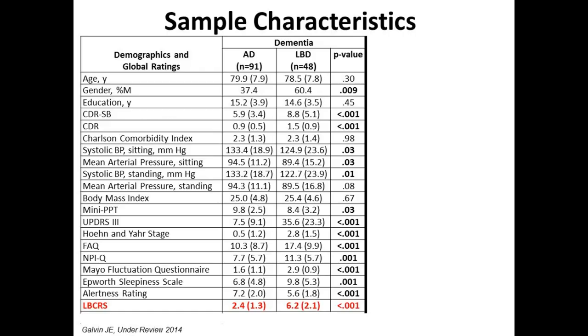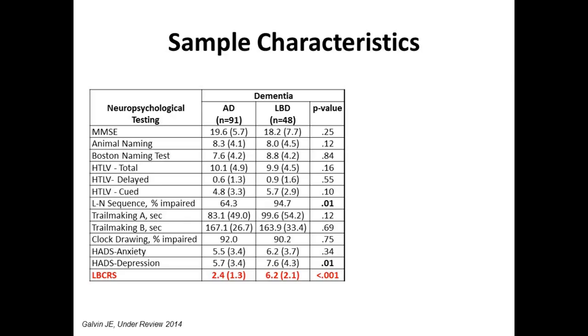What we found is that if we compared Alzheimer's disease to Lewy body dementia, the scores were significantly different — a score of six versus a score of two. So it's a good discriminator. Even more importantly, if we move a little bit earlier in the disease and look at people who have mild cognitive impairment due to Alzheimer's or Lewy body disease, it was three versus one. So that cutoff of three is able to pick up the people who likely have Lewy body disease. And this is true for all of their clinical features.